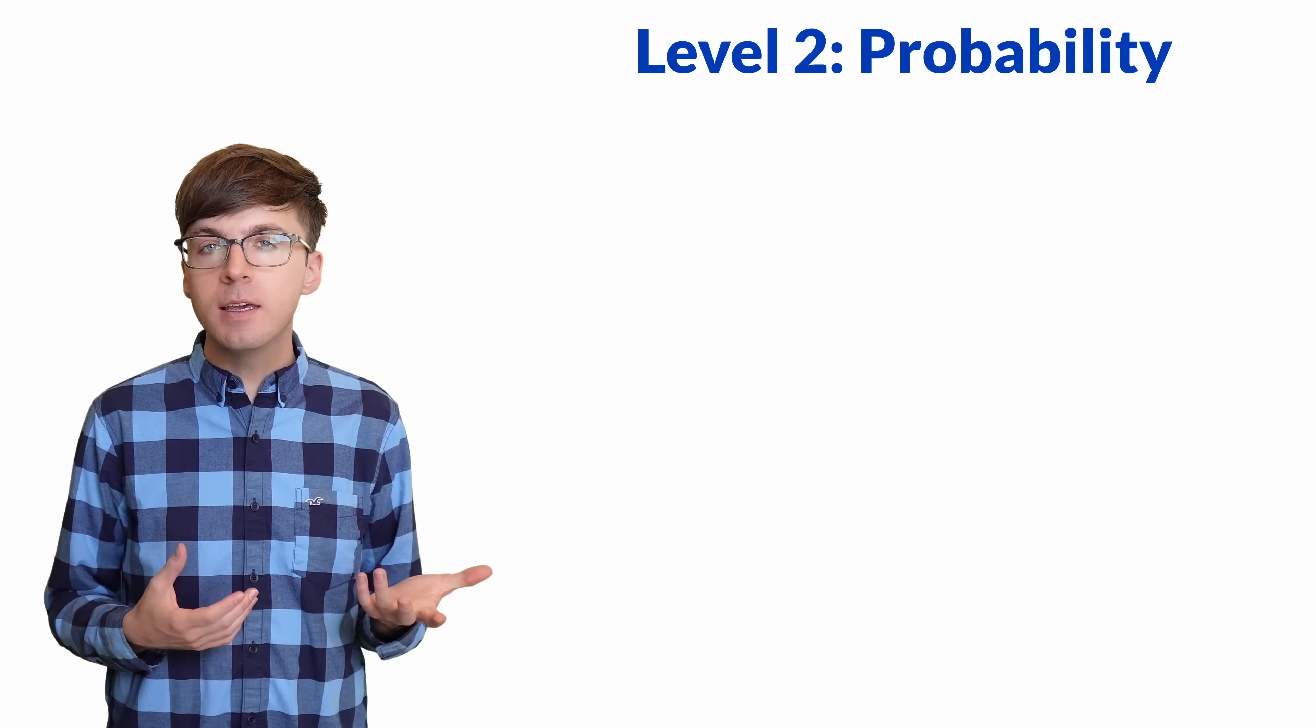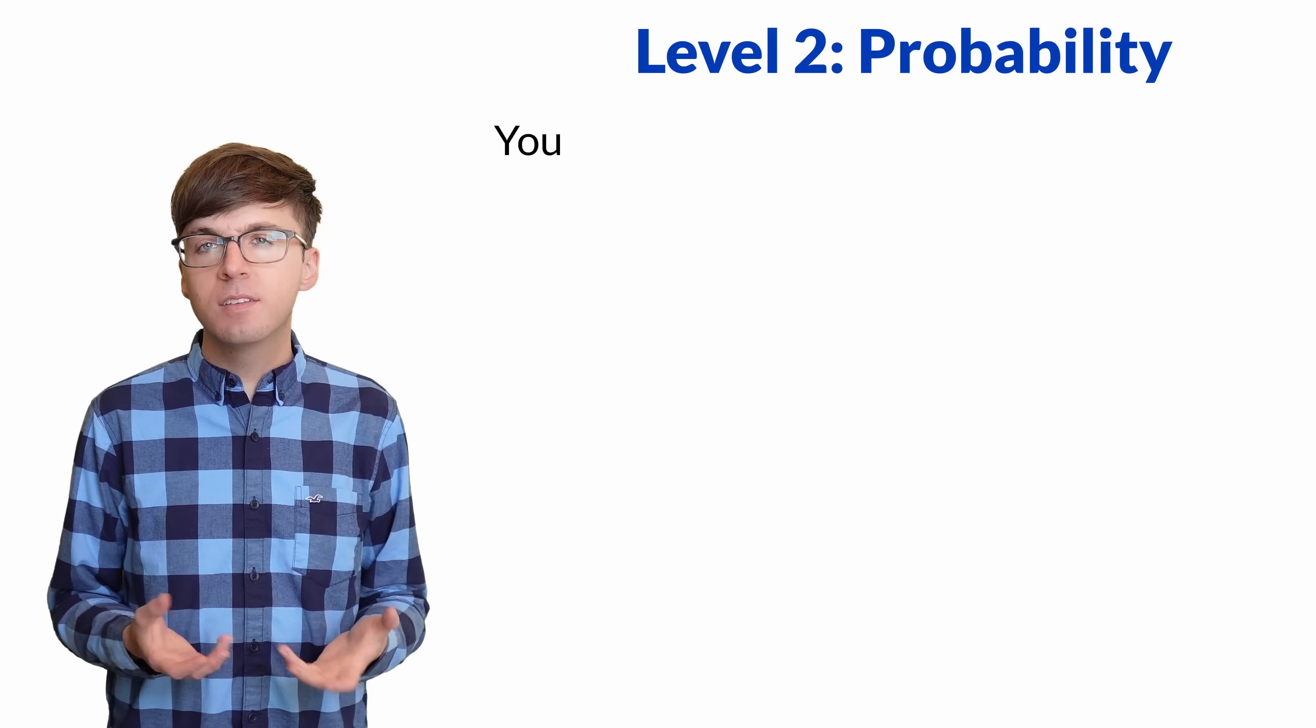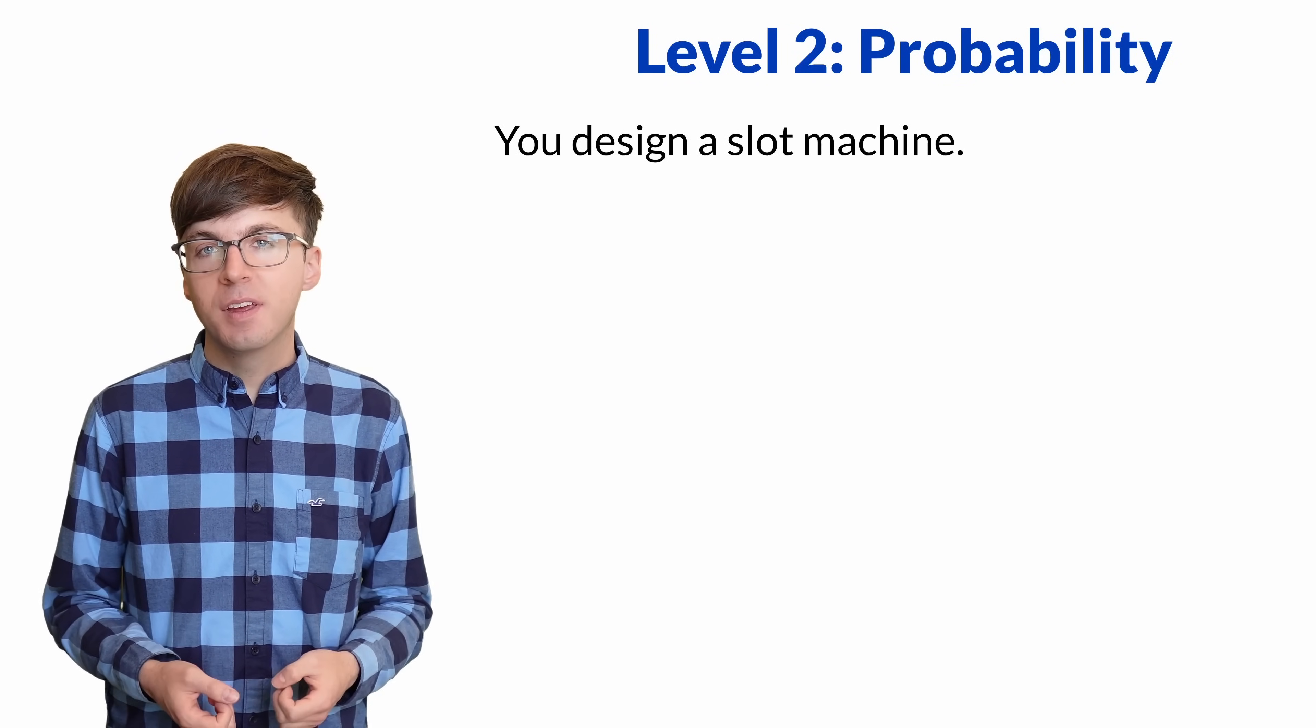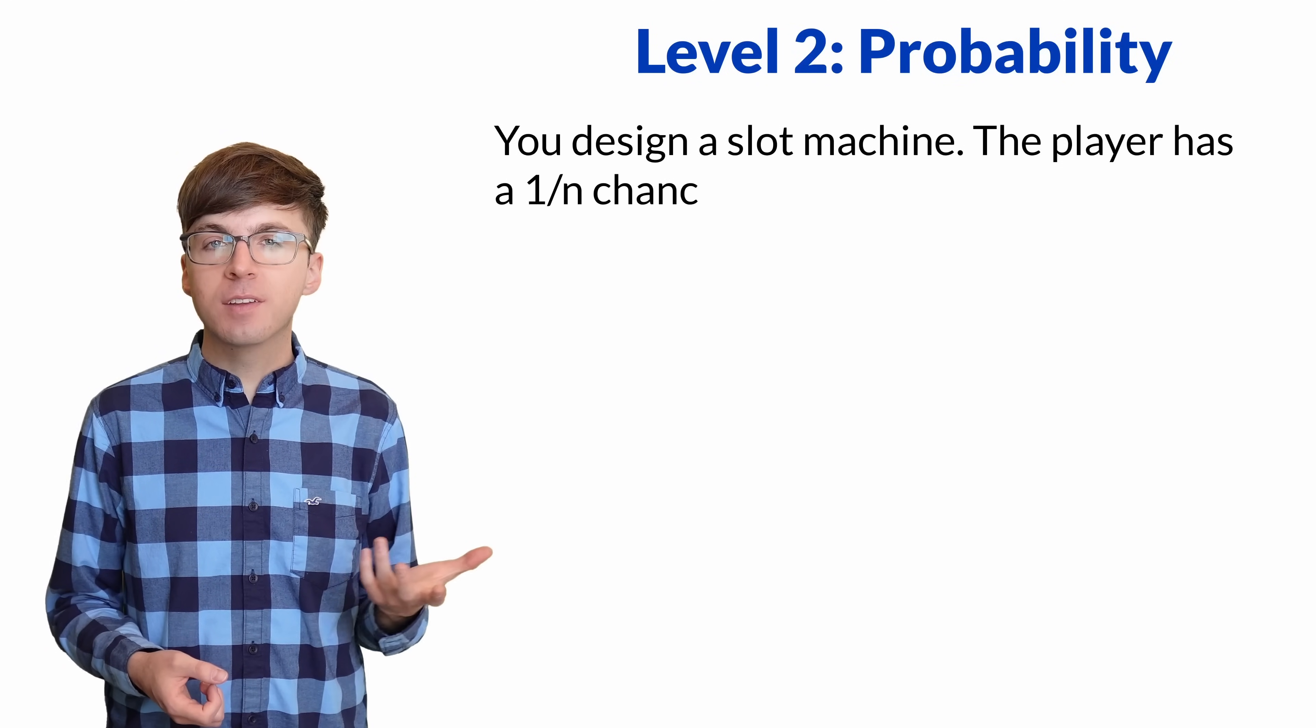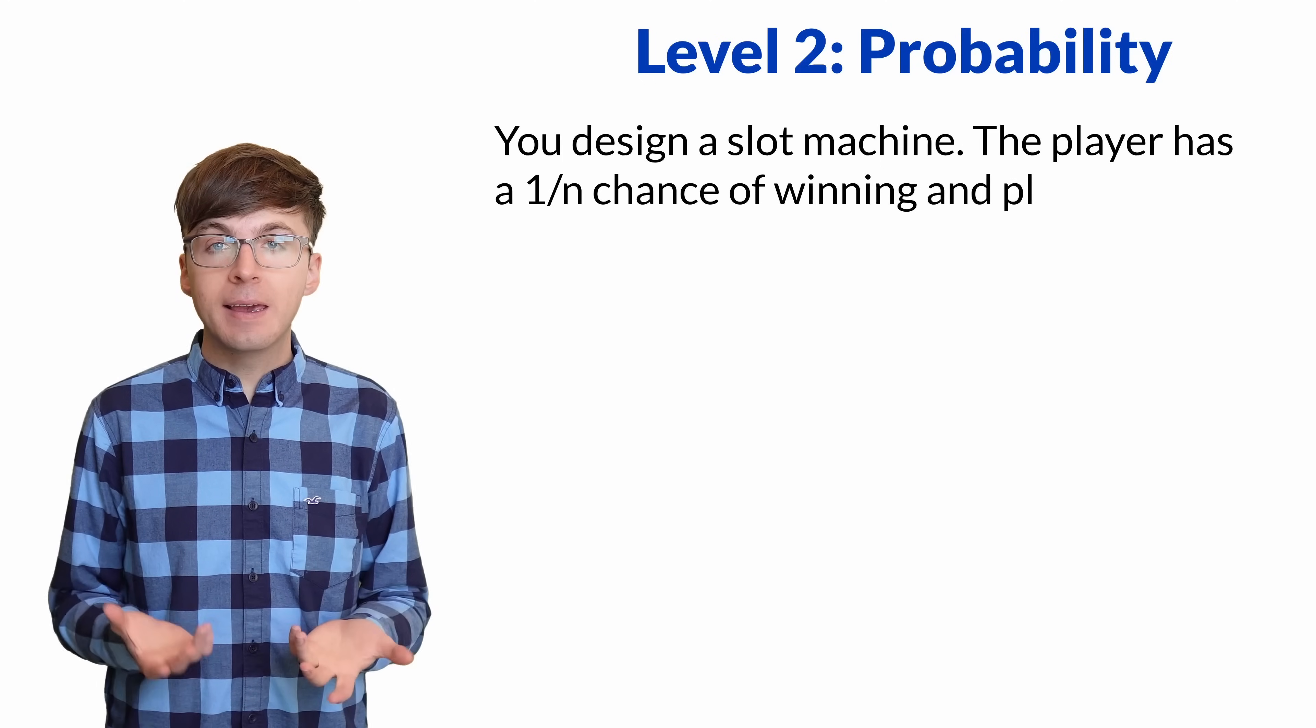For level 2, let's see how e relates to probability. Say you're designing a slot machine. The player will have a 1 over n chance of winning, but will get to play n times.